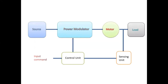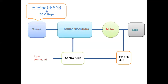Now we go through each part individually. First, source or supply. We have two types of supply available: AC voltage supply and DC voltage supply. AC voltage supply can be single phase or three phase. Motor drives have different power ratings — low, medium, and high. Low-level ratings are connected to single phase, while medium and high power drives are connected to three-phase supply.